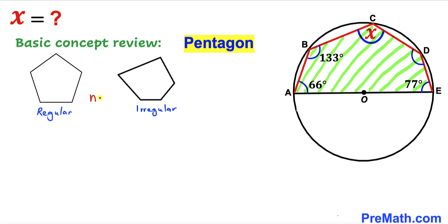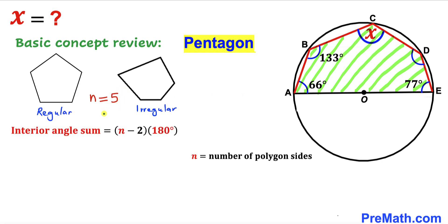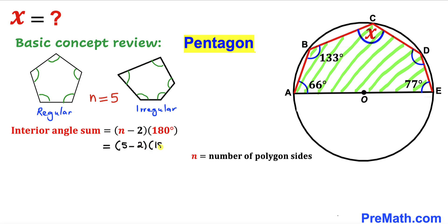The number of sides of this polygon equals five. To calculate the interior angle sum — the sum of all five interior angles — we use the formula: interior angle sum equals (n − 2) × 180°, where n is the number of sides. With n = 5, we get (5 − 2) × 180° = 3 × 180° = 540 degrees. So the interior angle sum for this pentagon is 540 degrees.